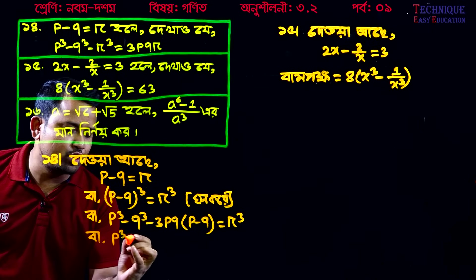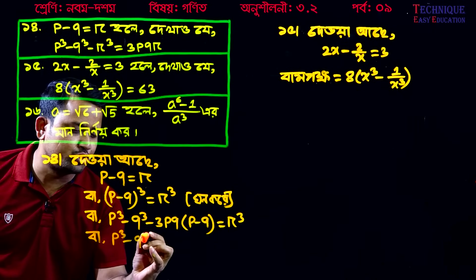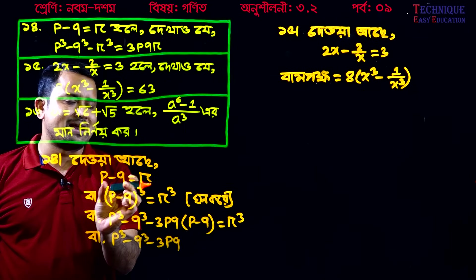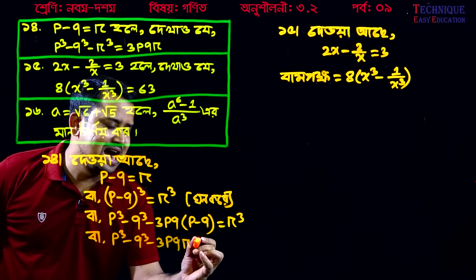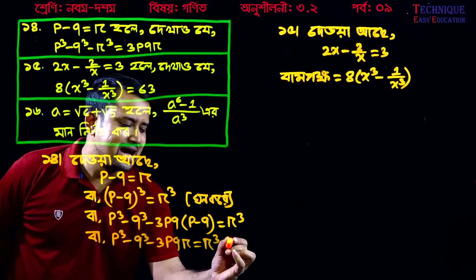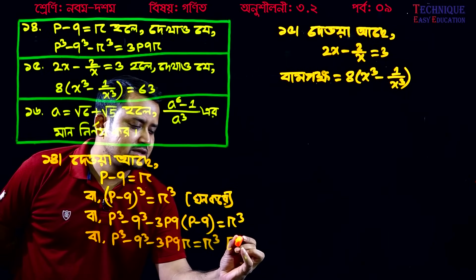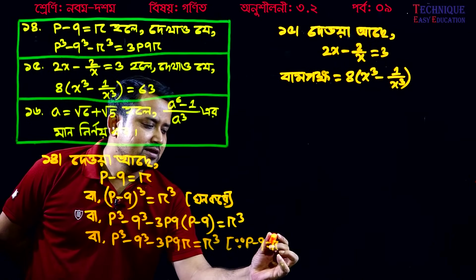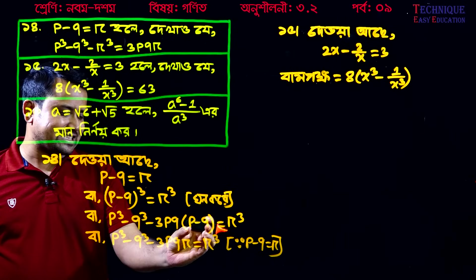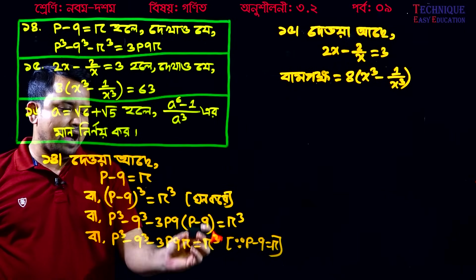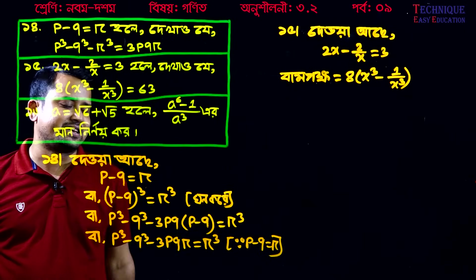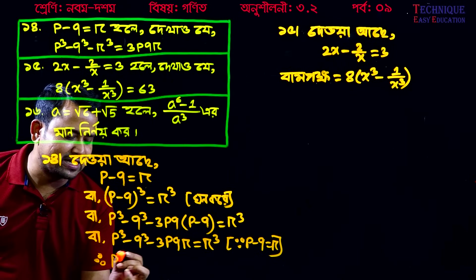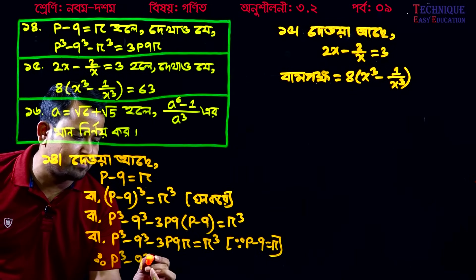We will speak about the meaning of P cubed minus Q cubed. So P cubed minus Q is R. R is R cubed. We will write here P cubed minus Q is R. We will read this as P cubed minus Q is R.